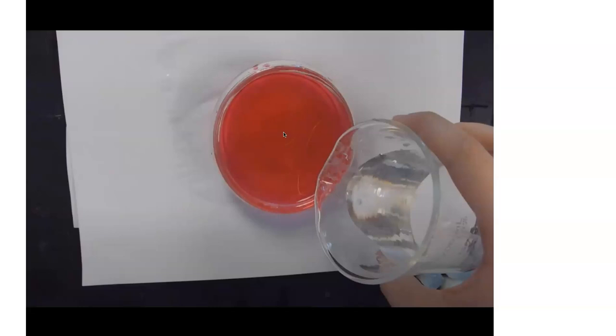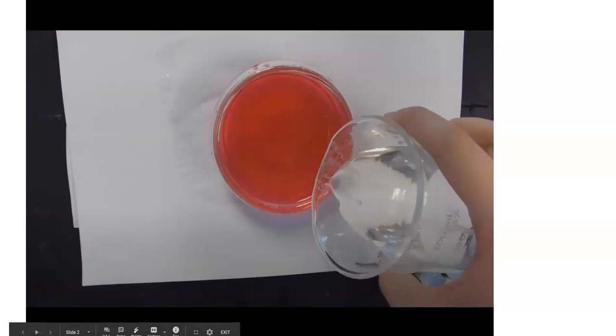That's right, it's a pH indicator. In this case, I added a little sodium hydroxide to the clear phenolphthalein and it turned pink. But check out what happens when I add a little vinegar. When we add vinegar, which is an acid, watch what happens to the phenolphthalein.